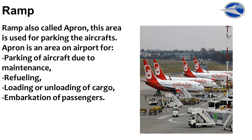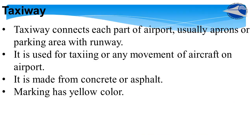The ramp, also called the apron, is an area used for parking aircraft. The apron is an area at an airport for parking of aircraft for maintenance, refueling, loading and unloading of cargo, and boarding of passengers.